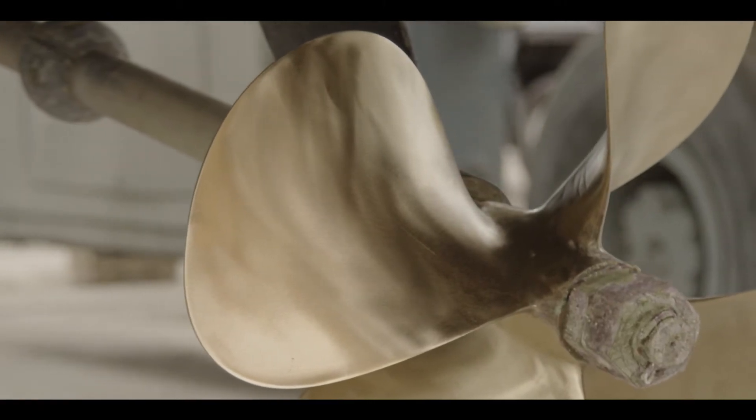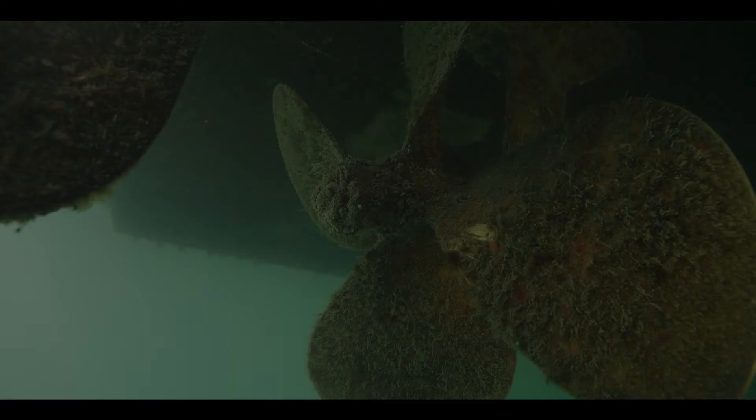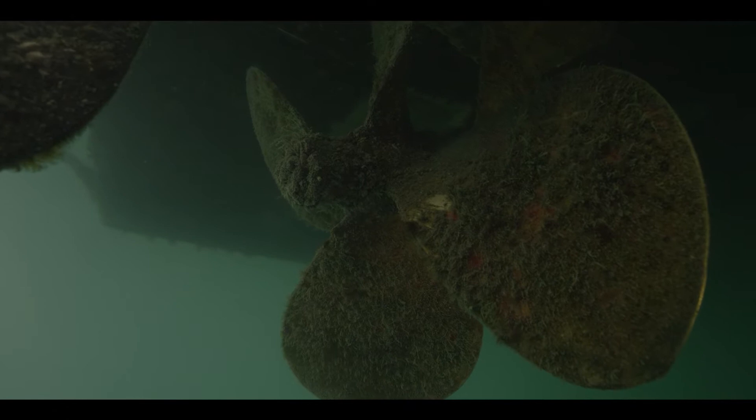PropOptimizer fills in microscopic scratches and nicks, creating a surface that is completely smooth, inhibiting marine growth such as barnacles, tubeworms, and zebra mussels.